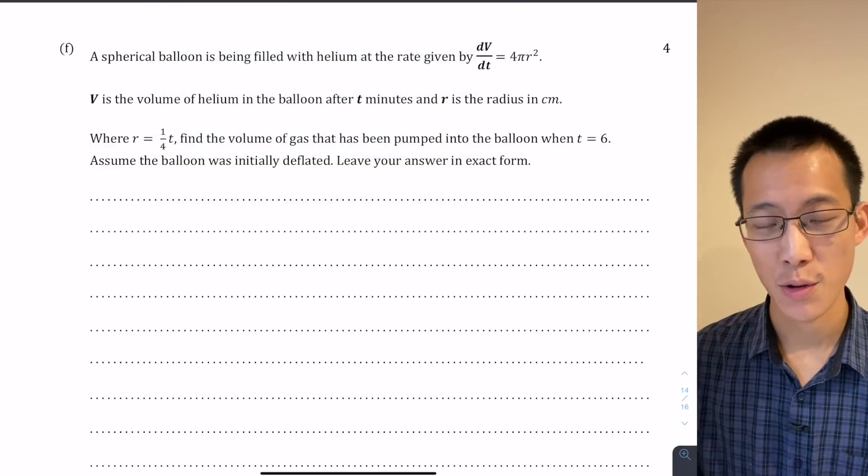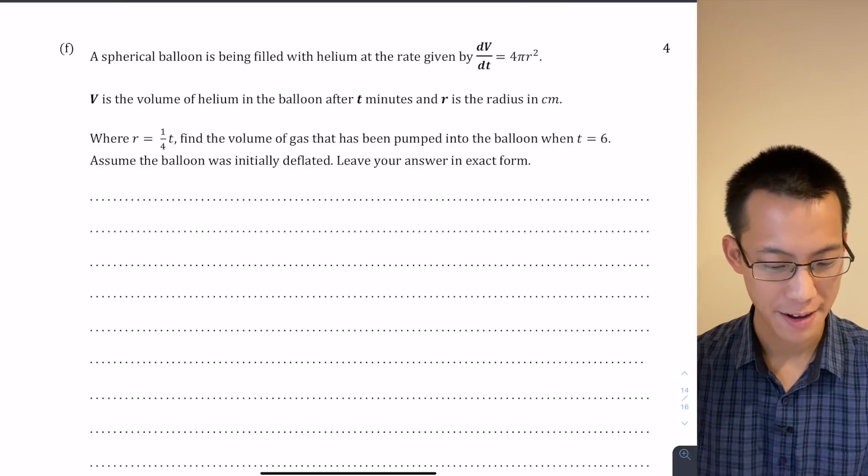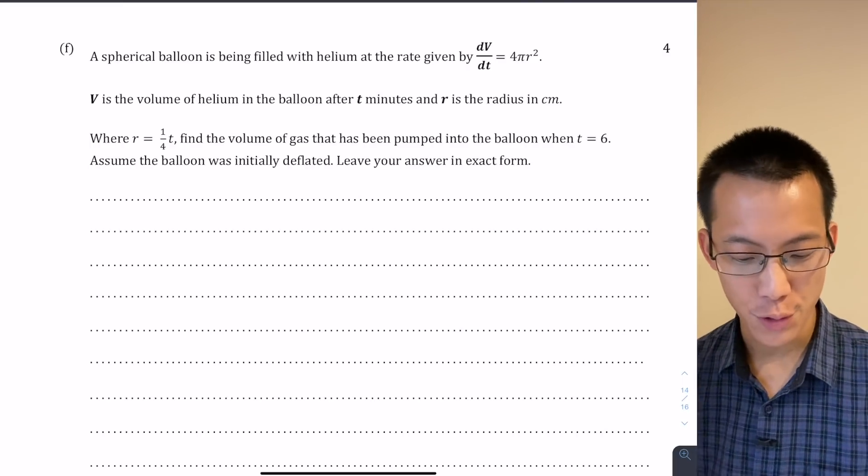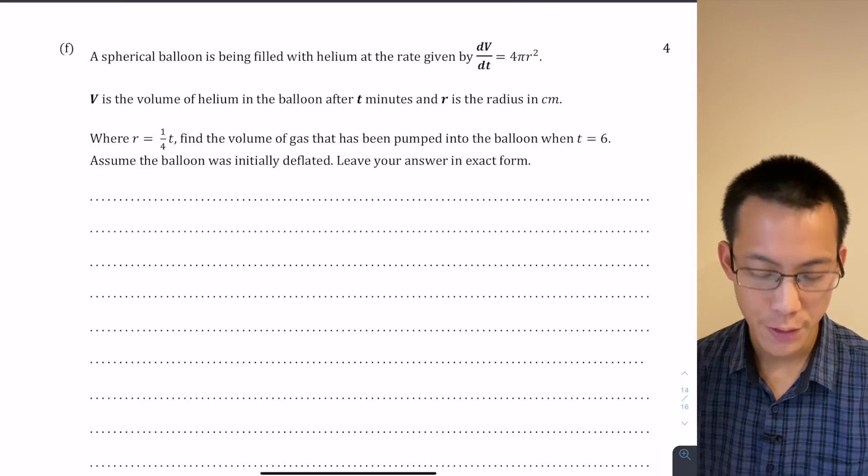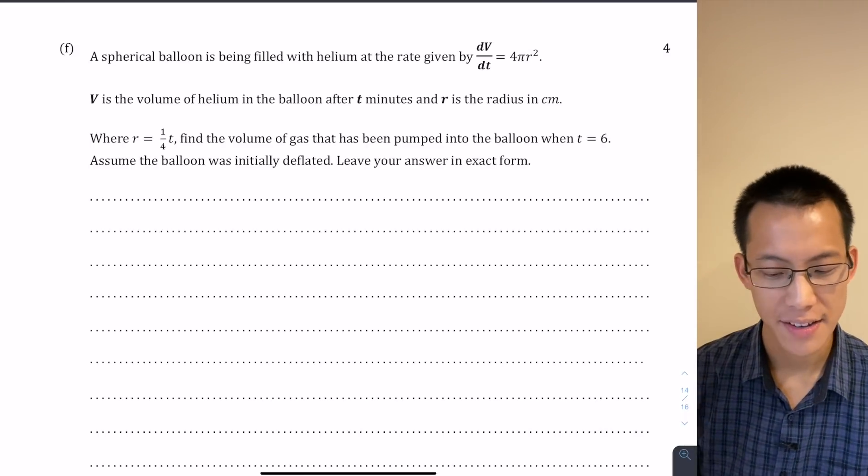This is a fairly long one, four marks, so we'll go through fairly slowly and make sure we methodically get everything right. A spherical balloon is being filled with helium at the rate given by dv/dt equals 4πr².